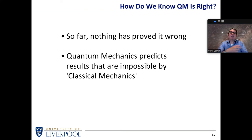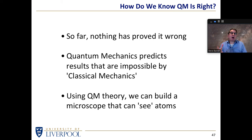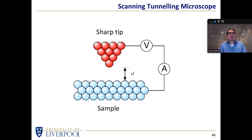Quantum mechanics predicts results that are impossible according to Newtonian mechanics. You can apply Newtonian clockwork-universe mechanics to a problem and get an answer that does not agree with what we actually find, whereas quantum mechanics does. So far, every time we apply quantum mechanics to a problem we can actually measure, it seems to give the right answer, whereas in many cases Newtonian mechanics does not.